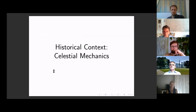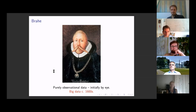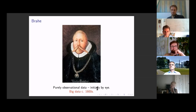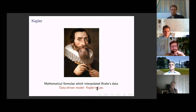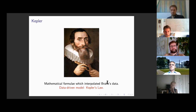So I'm going to talk about the use of data in celestial mechanics — really to indicate how things have changed, but also to highlight the scientific method. Brahe's work was purely based on observational data — what would now be called big data — in the 1600s. Kepler took this data and derived mathematical formulae which interpolated it, producing a data-driven model: equations compatible with the data leading to Kepler's laws, but with no first principles involved at that point.